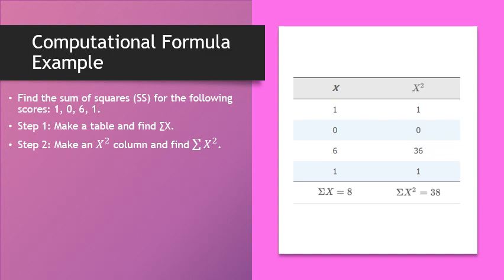Step 2 for the computational formula is to make an x squared column and then add that data up to find the summation of x squared. In this case, your x squared column — you're just going to square each of the original x scores — and you're going to get a total equal to 38. So you're going to have a small number, which is the summation of x, and you're going to have a big number, the summation of x squared.